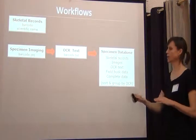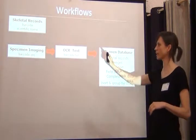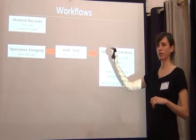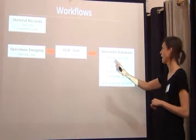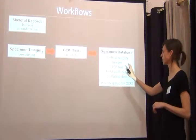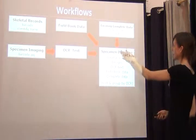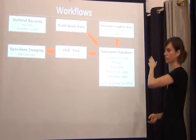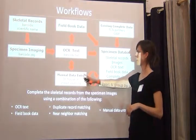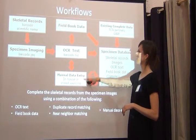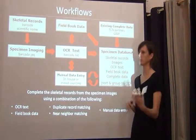Our current workflow for most things is to create a skeletal record by adding a barcode and a scientific name to specimens, imaging them, OCRing the text, adding the OCR text to the database. The database will have field book data in it and existing complete records from partner institutions. From there we do manual data entry in-house or crowdsourcing that takes the OCR text and the current information and tries to tie it all together.